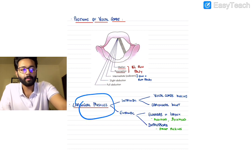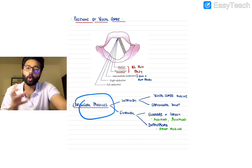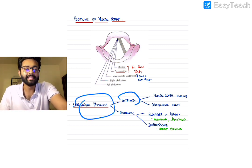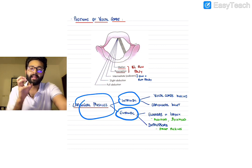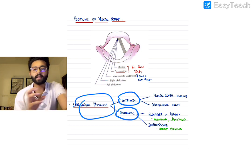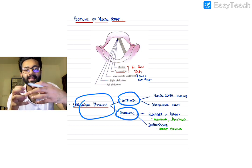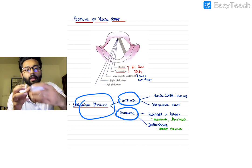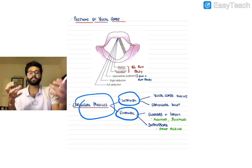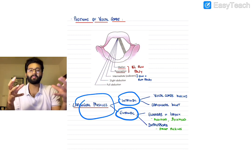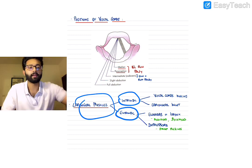The laryngeal muscles can be broadly divided into two types: intrinsic muscles of the larynx and extrinsic muscles of the larynx. Intrinsic muscles are those that lie within the laryngeal apparatus, and extrinsic muscles are those that lie outside the laryngeal apparatus but act on the larynx.